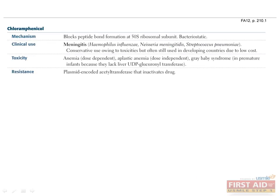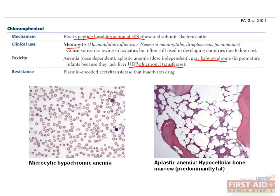Chloramphenicol is a bacteriostatic drug that inhibits 50S peptidotransferase activity. It is classically used to treat meningitis, but has limited utility when other options are available due to numerous toxicities. It cannot be metabolized by infants lacking liver UDP-glucuronosyltransferase, resulting in gray baby syndrome. It is also associated with anemia and aplastic anemia, both of which are dose-dependent.